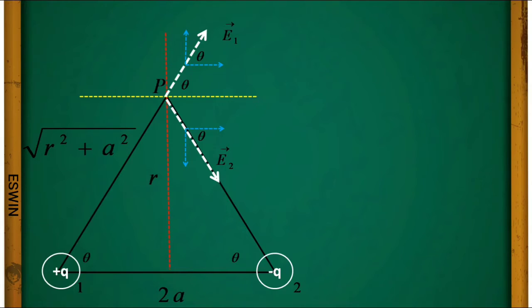The x-component for E1-bar will be E1·cos θ and the y-component will be E1·sin θ. Similarly, the x-component for E2-bar will be E2·cos θ and the y-component will be E2·sin θ.